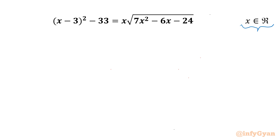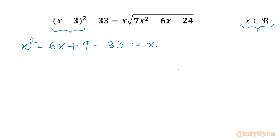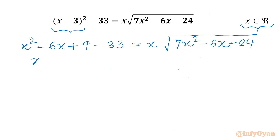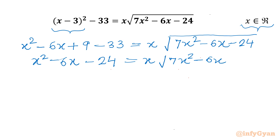Let's get started with the algebraic identity (a minus b) whole square. So I can write: x squared minus 2ab, which gives minus 6x, plus b squared, so 3 squared is 9, minus 33, equal to x times square root of 7x squared minus 6x minus 24. Now 9 minus 33 gives us minus 24, so the left hand side becomes x squared minus 6x minus 24.